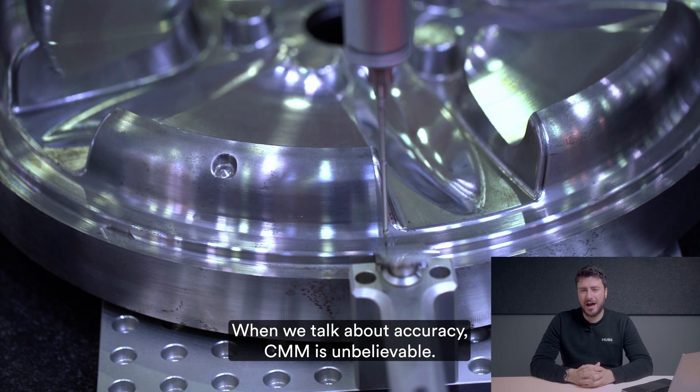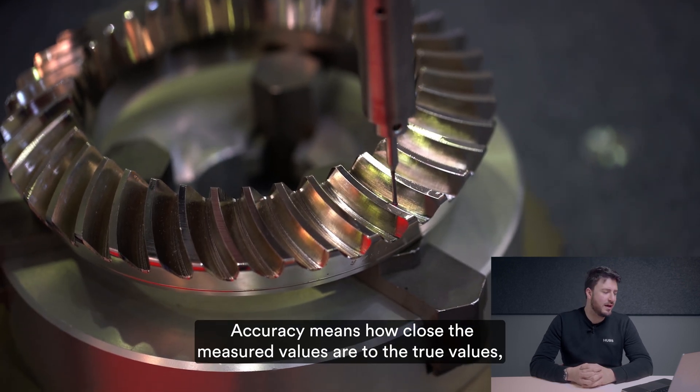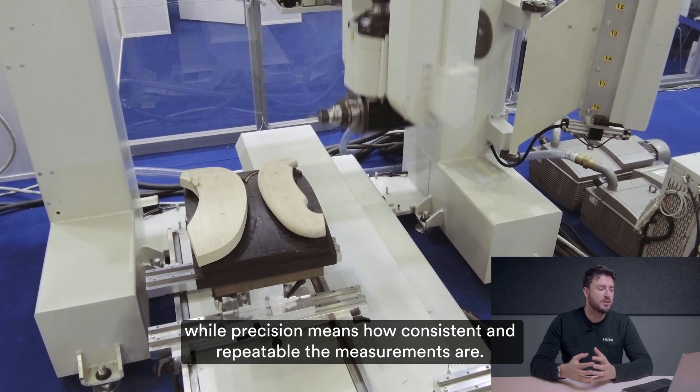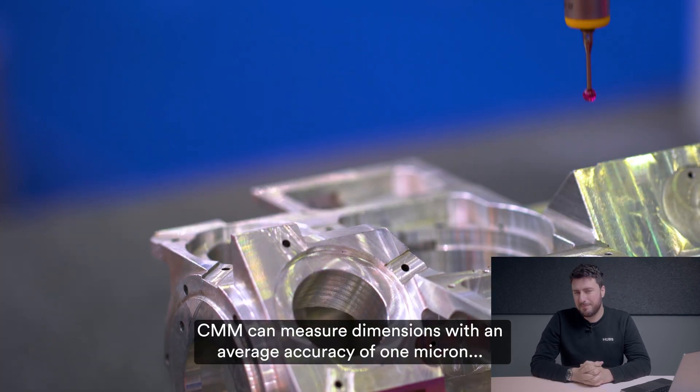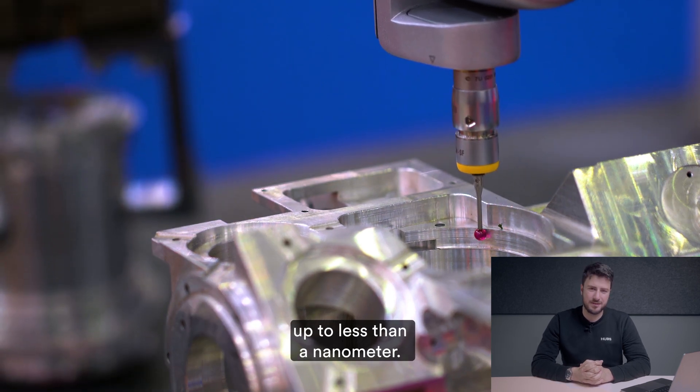When we talk about accuracy, CMM is unbelievable. Of course by accuracy we mean how close the measured values are to true values while precision means how consistent and repeatable the measurements are. CMM can measure dimensions with an average accuracy of one micron up to less than a nanometer - that's crazy.